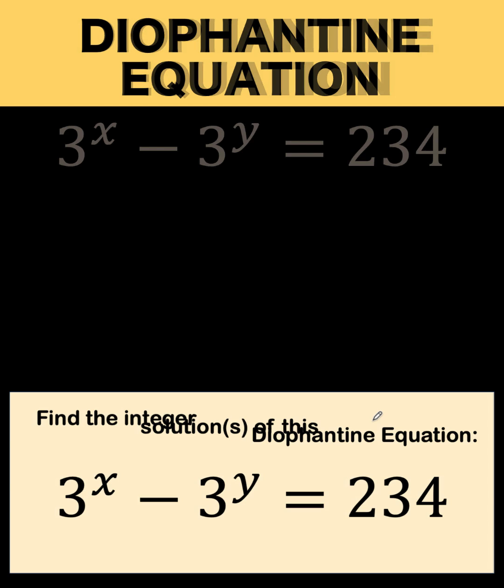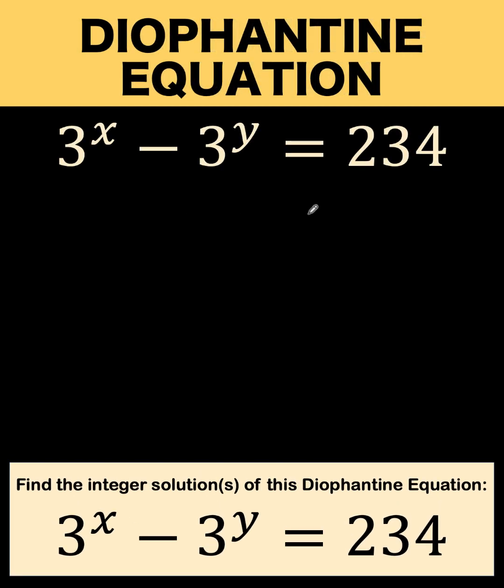So let's do some simplification first. When solving for Diophantine equation, we would like to, as much as possible, express both sides of the equation into products of integers. That is, express this left side as product of two expressions, this 234 as product of two integers.